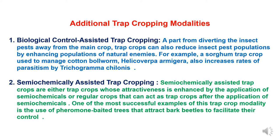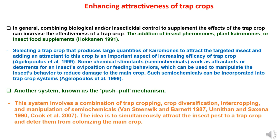Second is semi-chemically assisted trap cropping. These are either trap crops whose attractiveness is enhanced by the application of semi-chemicals, or regular crops that can act as trap crops after the application of semi-chemicals. One of the most successful examples is the use of pheromone-baited trees that attract bark beetles to facilitate their control.